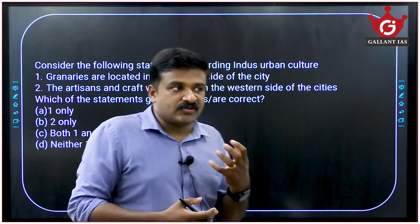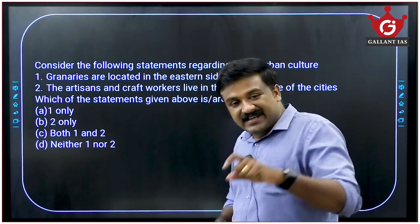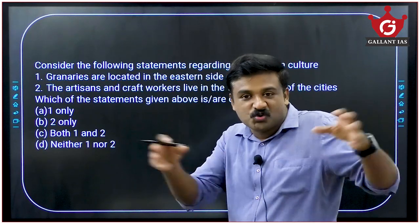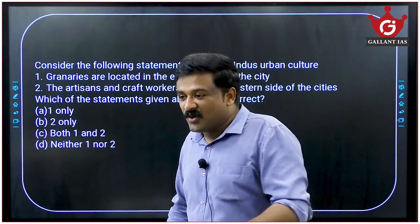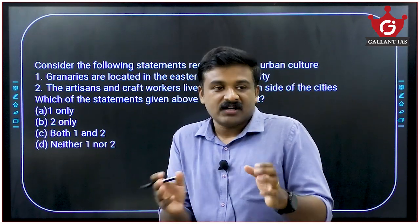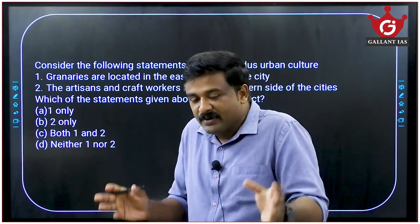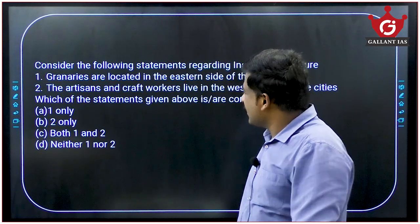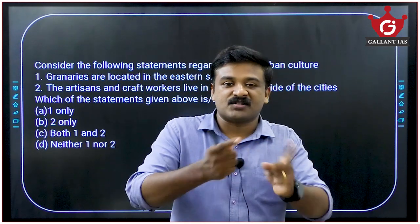Regarding the urban culture of the Indus civilization, consider the statement: 'Granaries are located in the eastern side of the city.' This is wrong — all huge dimensional buildings including the granary, Great Bath, pillar hall, assembly hall, and temple-like palaces are towards the western side in the Citadel. Artisans and craft workers living in the western side is also technically wrong. Both statements are interchanged and therefore incorrect.